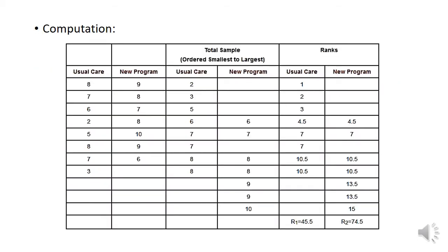For our computation, we have here our data for the usual care and the new program. We need to arrange this from smallest to largest and then rank the values. Then we need to get the sum of rank 1 and the sum of rank 2. Remember, our rank 1 is for the usual care and rank 2 is for our new program.